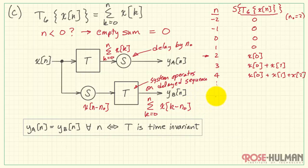The system T_6 is operating on this delayed sequence. So let's take a look at that. Here, T_6 operates on the shifted sequence. Put down some values for n. And again, this still applies. As long as n is less than 0, we have a result of 0.